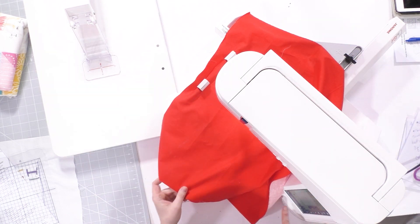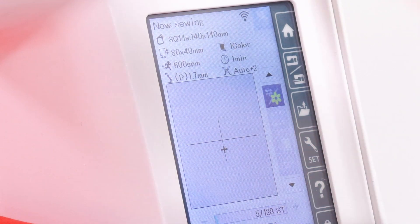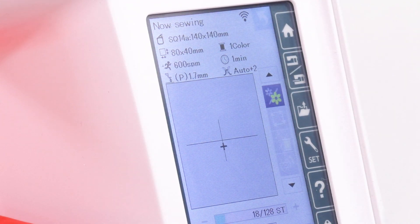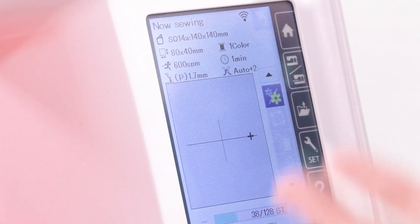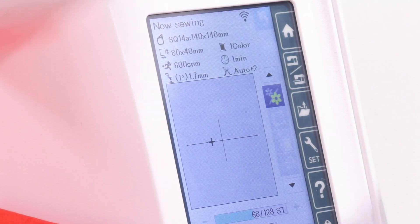Now I'm going to hoop this up and press start. It's stitching out that calibration cross, which will give me a point of reference on my cloth setter.